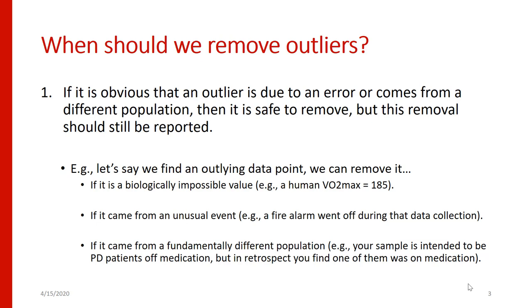Another case would be if someone came from a fundamentally different population. For example, if your sample is intended to be Parkinson's disease patients who are off their medication, but you later find out one participant was actually still on their medication, then this is a qualitatively different person in terms of the population you're drawing from, and it would be appropriate to exclude them. In any of those situations, it's completely legitimate to exclude those data points. But if we make any exclusions, we want to be transparent in reporting them so everyone knows exactly how much data went into which analysis and who was excluded for what reasons.